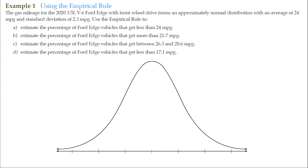Now we can use the empirical rule to answer this scenario. The gas mileage for the 2020 3.5-liter V6 Ford Edge with front-wheel drive forms an approximately normal distribution with an average of 24 miles per gallon and a standard deviation of 2.3 miles per gallon. We're going to use the empirical rule to estimate percentages for various conditions.